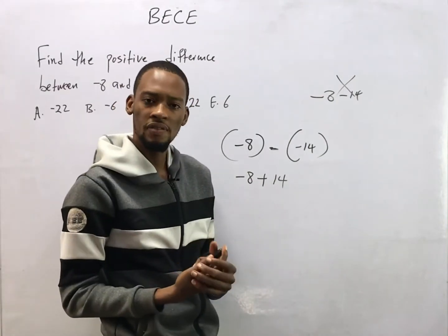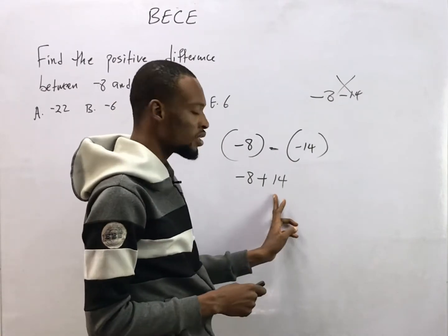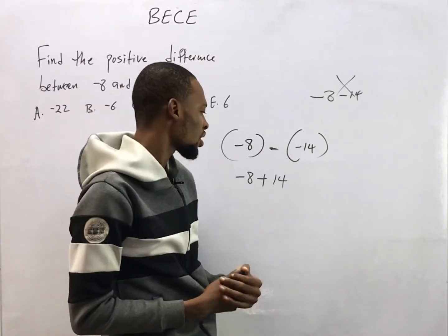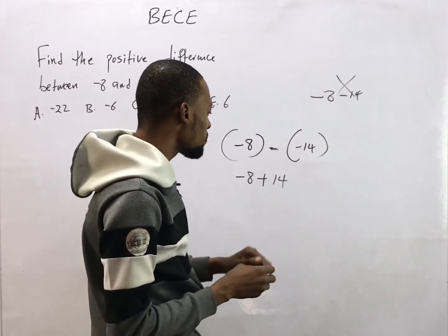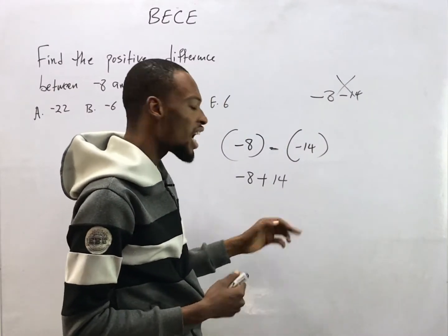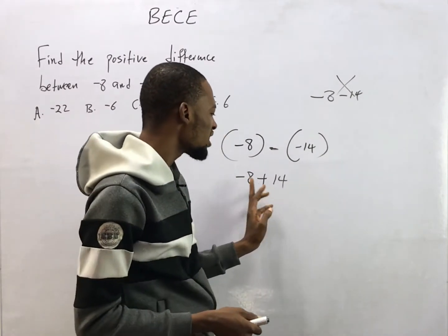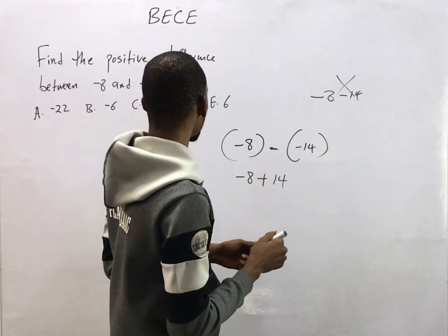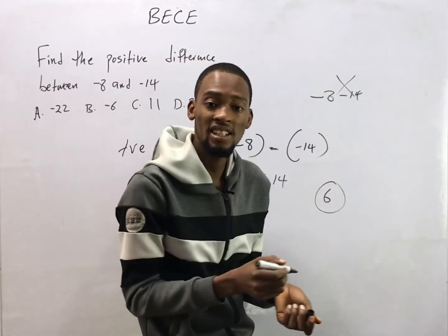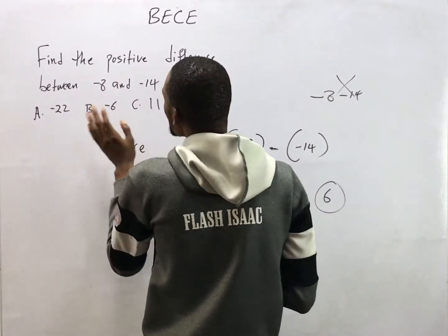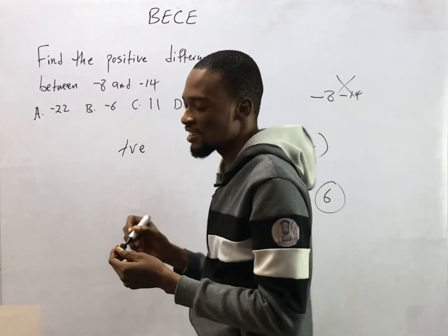You can solve this in different ways. Let minus mean that you are owing and let plus mean that you have. So if you are owing 8 naira and you have 14 naira, how much will you be left with after paying? It's the same as 14 minus 8, which gives you 6. So the positive difference between minus 8 and minus 14 is 6. Your answer is E: 6.